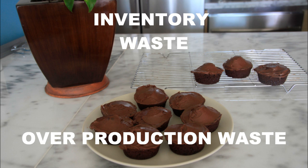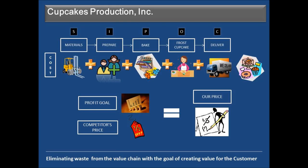Three were left to go stale in the inventory due to overproduction waste. Now that we've identified all the waste, we have to eliminate it from the value chain with the goal of creating value for the customer. What feedback can you give Anna to make her process better?